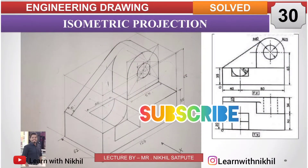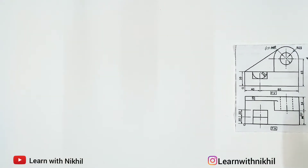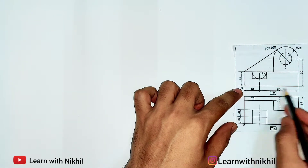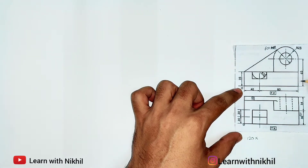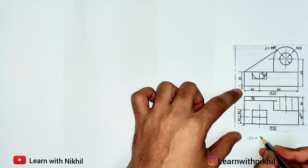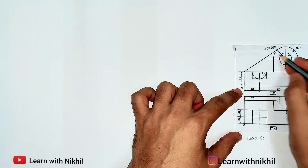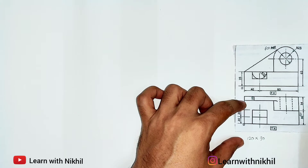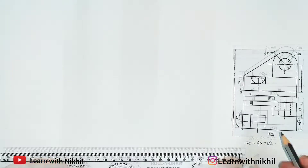Hello and welcome back to my channel Learn with Nikhil. In this video we have taken another sum on isometric projection where we have been given the front view and the top view. We have to draw its three-dimensional isometric view. First we will find the total width, height, and depth of the figure. From point O on the right side you can see 80 plus 40, that is 120. Height of the figure is 65 plus the radius of the semicircle that is 25, so 65 plus 25 will be 90. The depth of the figure is 28 plus 34, that is 62.